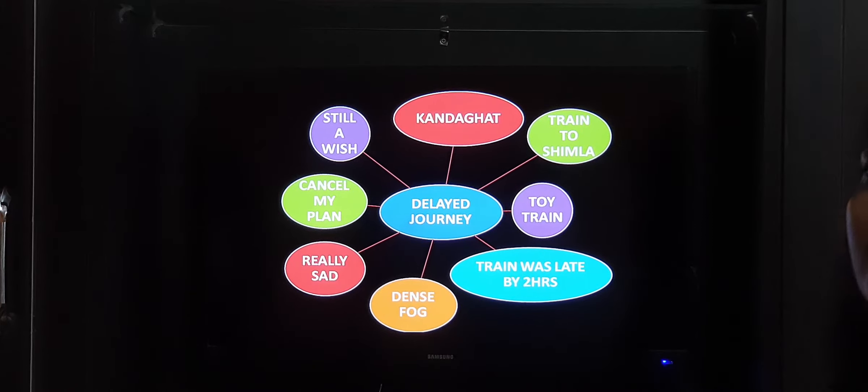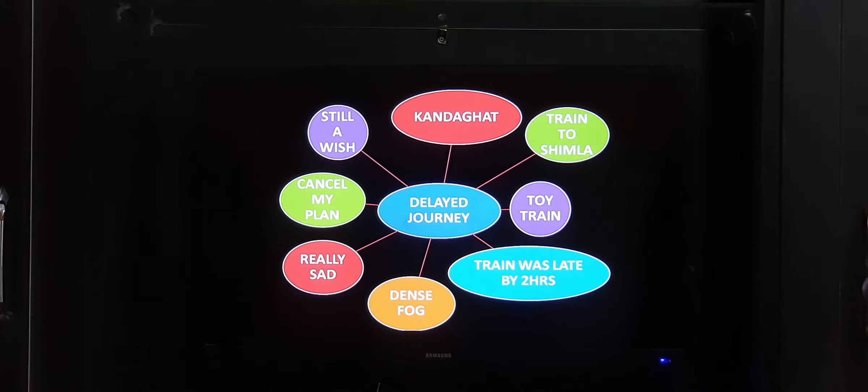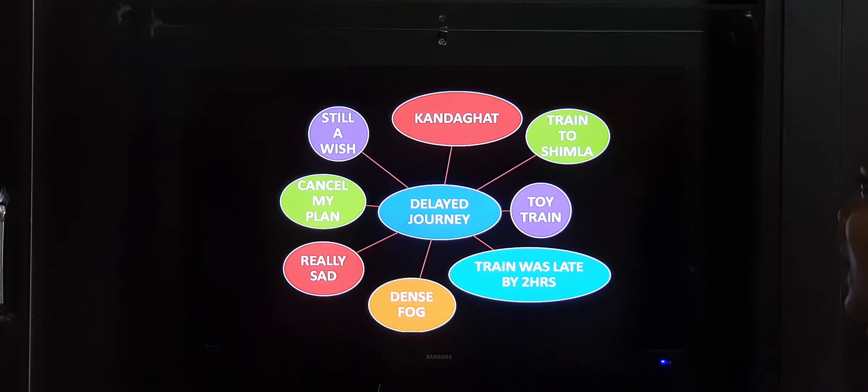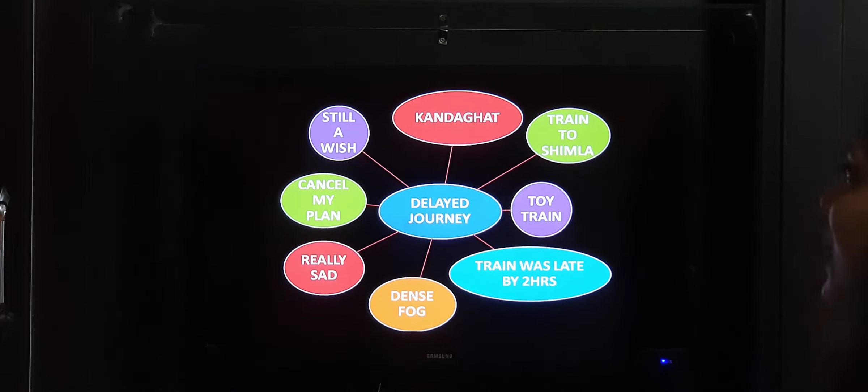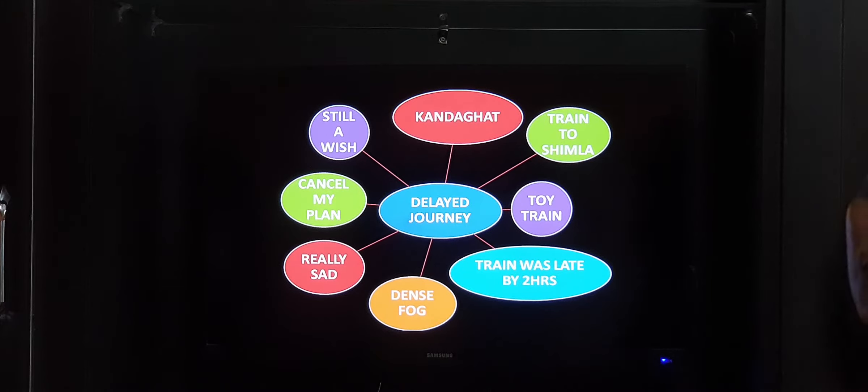But the train was late by two hours. Why was it late by two hours? Because there was dense fog. I was really sad because I couldn't enjoy that journey and I had to cancel my plan because it was late by two hours. It is still a wish of mine to travel by the toy train.